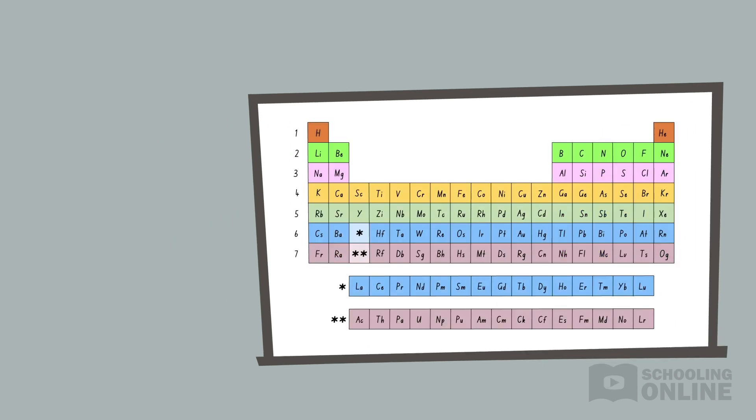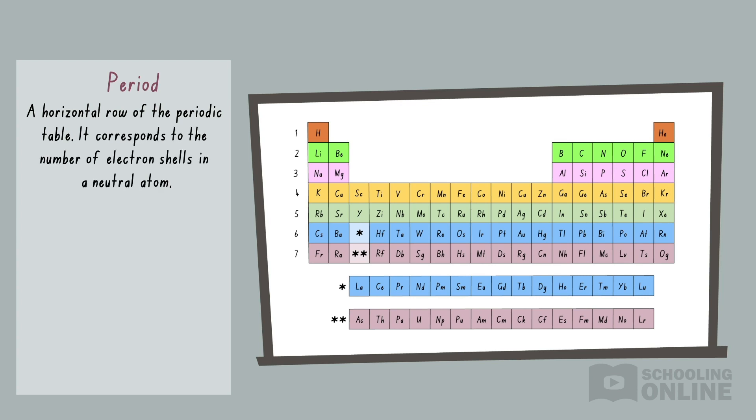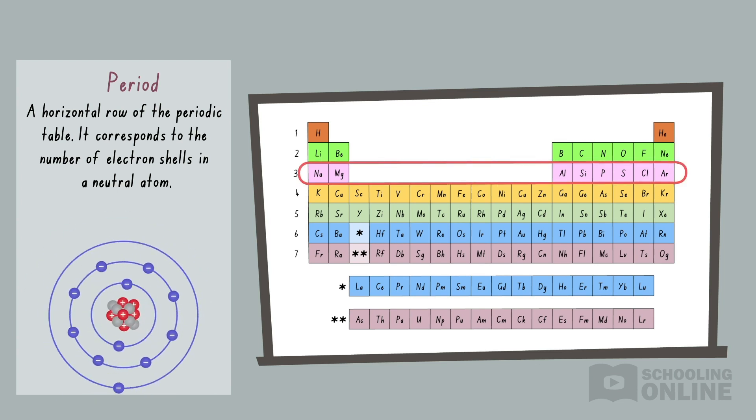Next, let's explore how the periodic table relates to atomic structure. A period is a horizontal row of the periodic table, and corresponds to the number of electron shells in a neutral atom. For example, sodium is in period 3, so a neutral sodium atom has 3 electron shells. At the time of writing, there are 7 rows in the periodic table, but if new elements are discovered, it will expand to 8 rows.